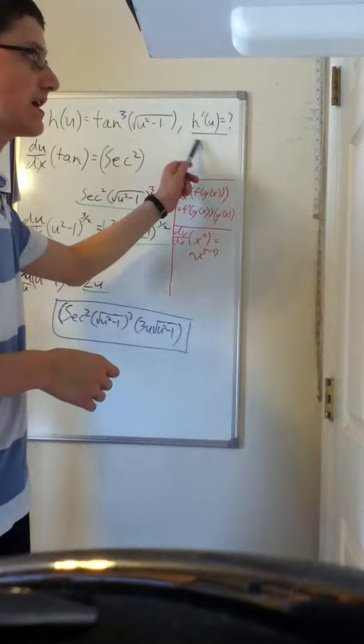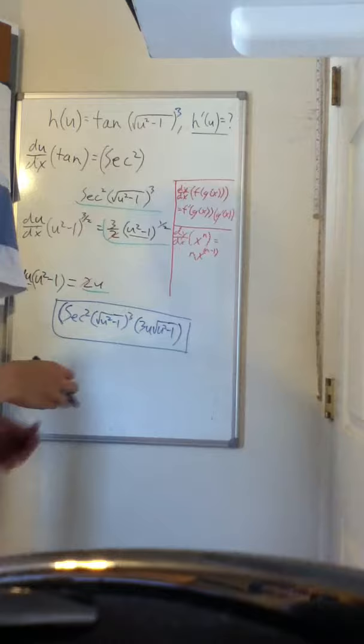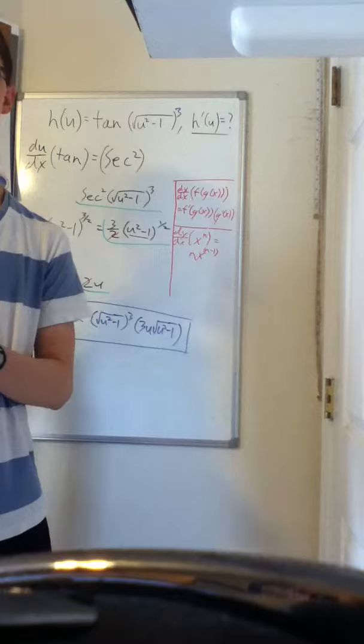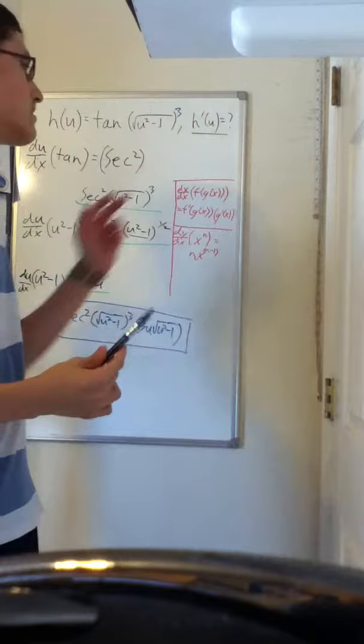To start we can simply separate the cube from the tangent and bring it to the function. Tangent cube of x is the same as tangent of x cubed. Now we can't take the derivative of all this at once. We have to do it in parts given by the chain rule.